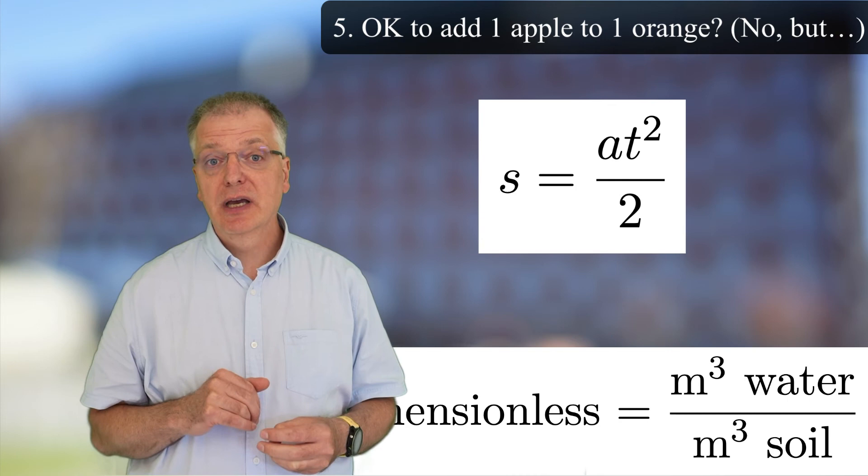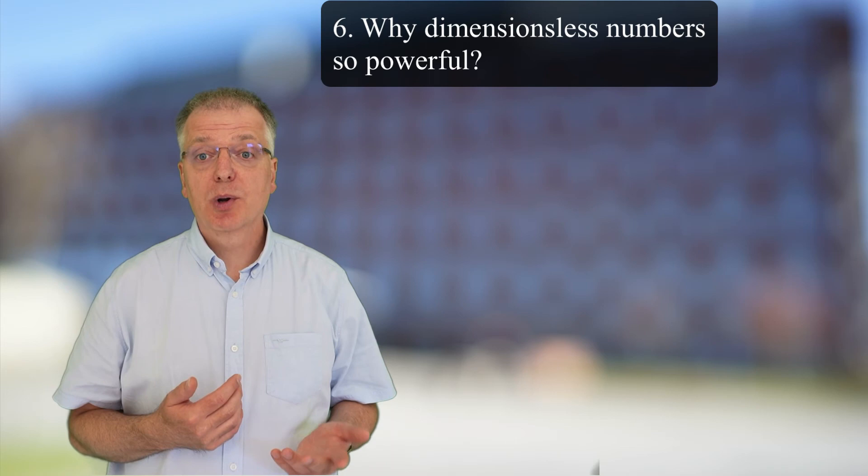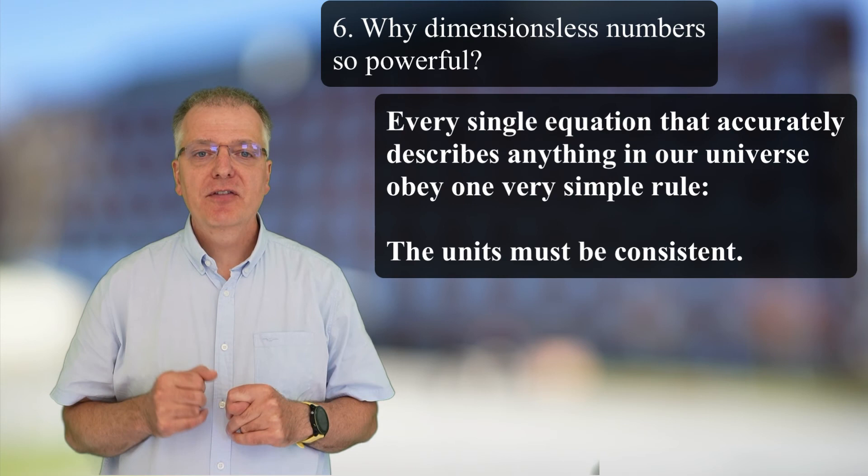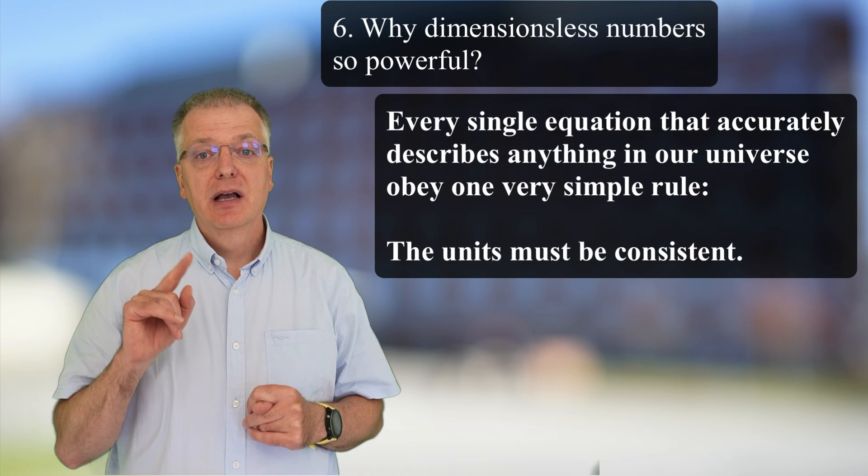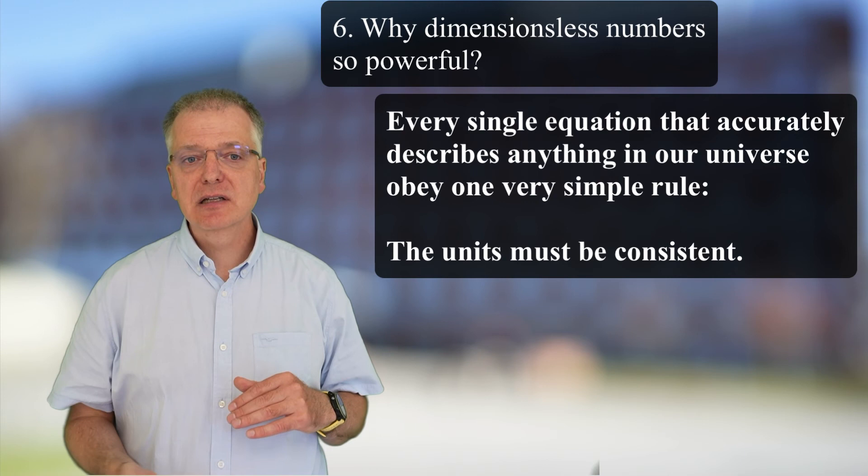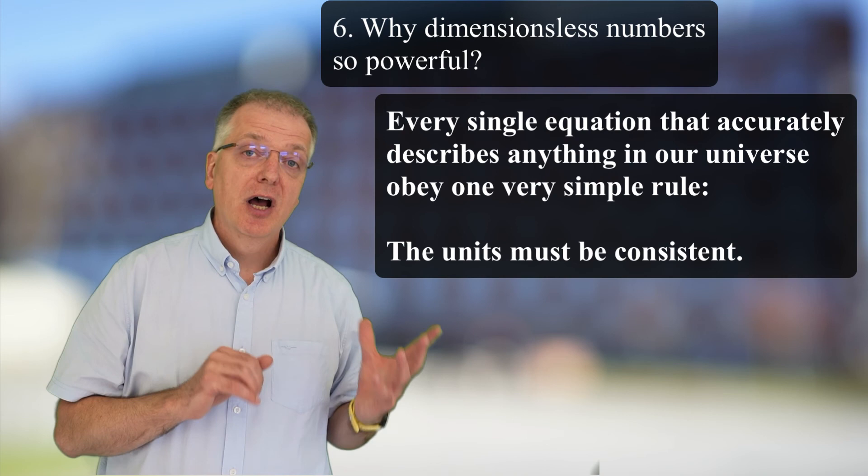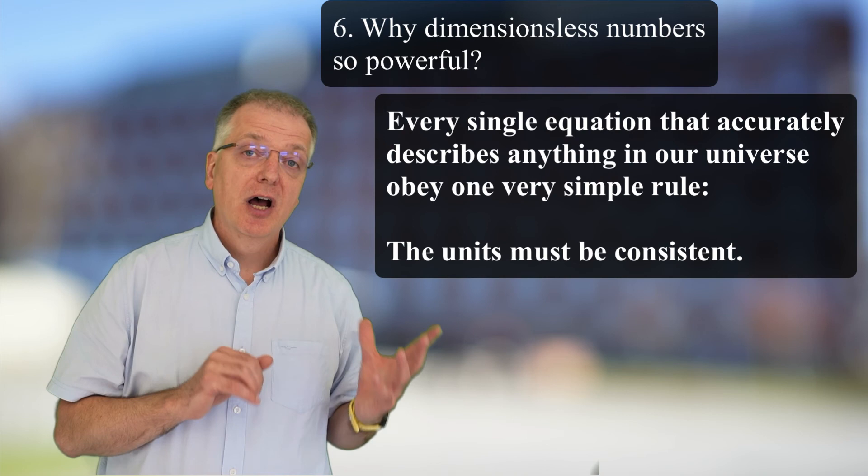As our sixth and last question, have you figured out yet why dimensionless numbers such as Reynolds number are so powerful in explaining our world? To reiterate what we said in the beginning, every single equation that accurately describes anything in our universe obeys one very simple rule: the units must be consistent. But this also means that you can shuffle around your equation and translate it into an expression using dimensionless numbers. Using dimensionless numbers, we comparatively easily can summarize and compare vast numbers of experiments and find the best fit of the magnitude, regardless of magnitude.